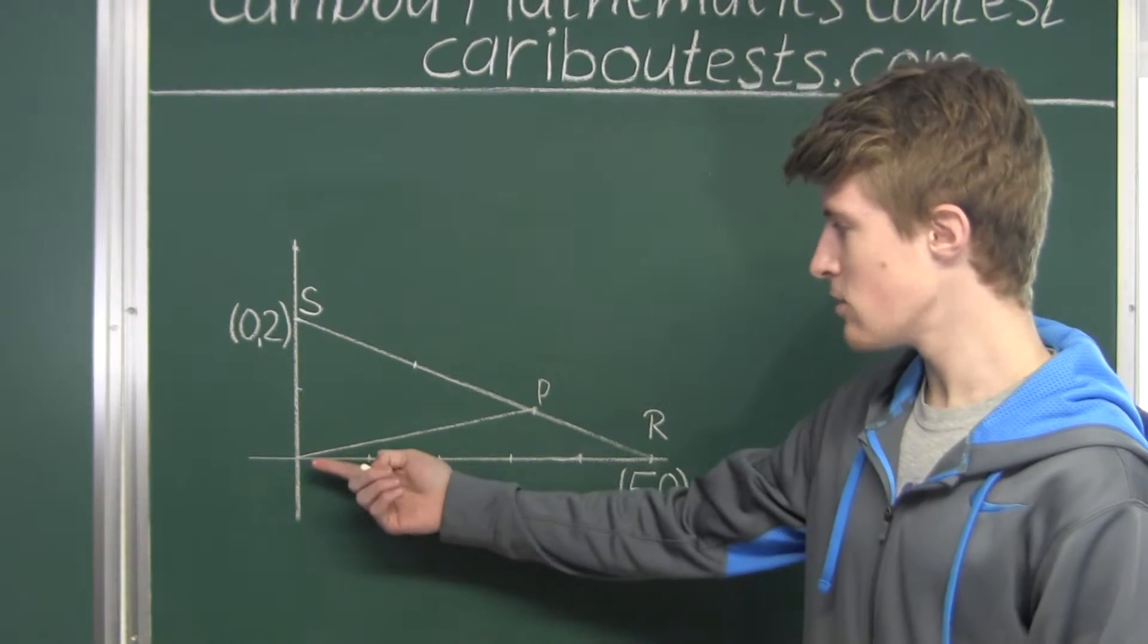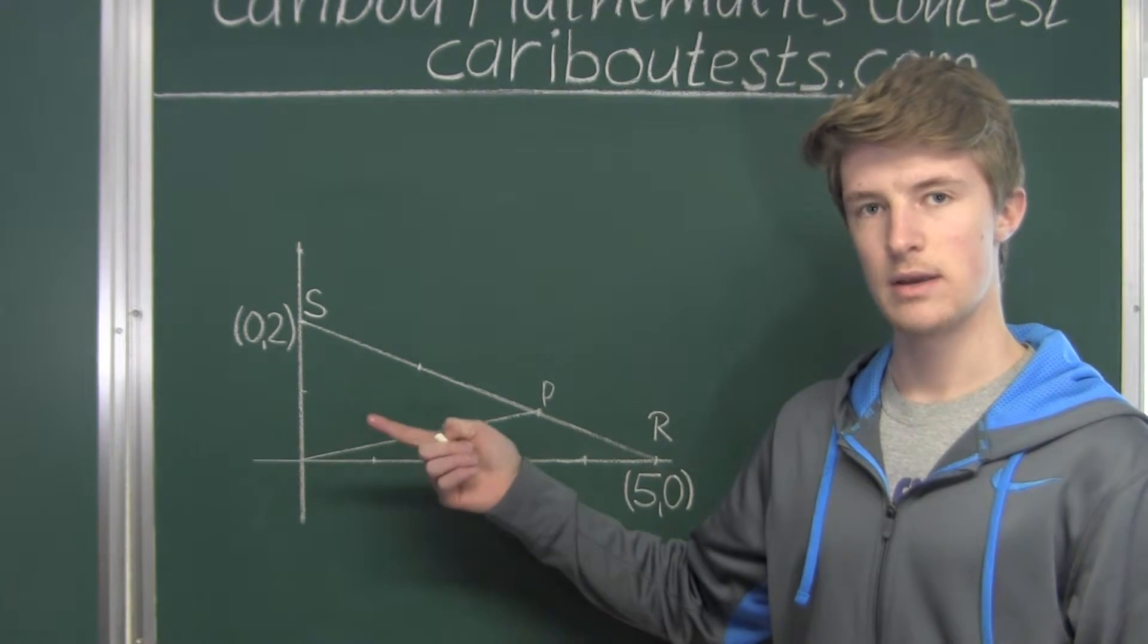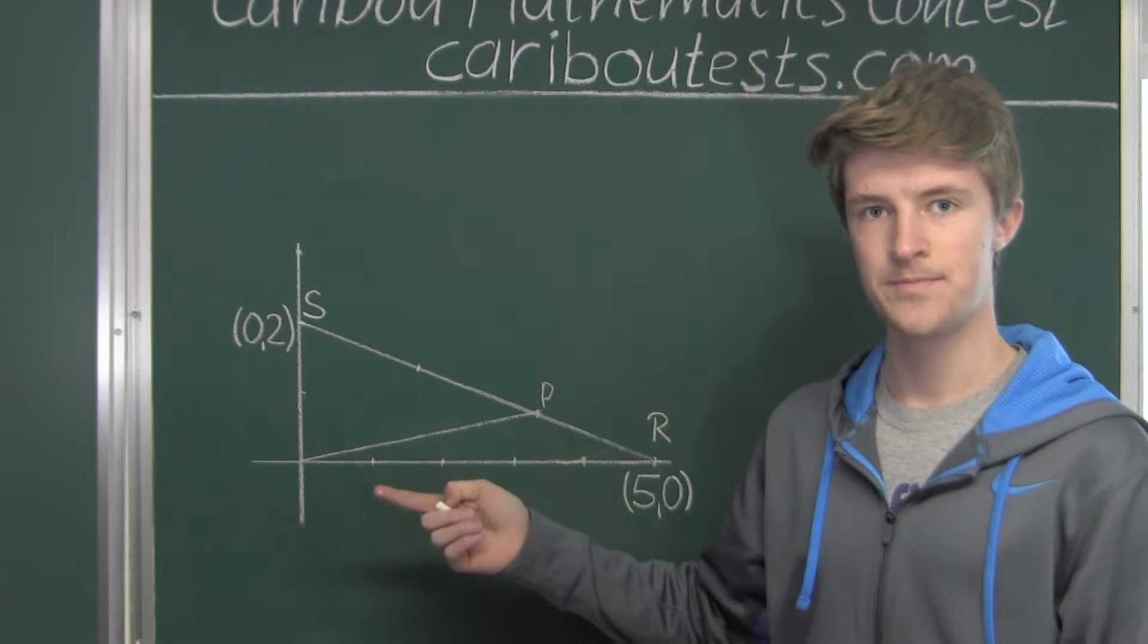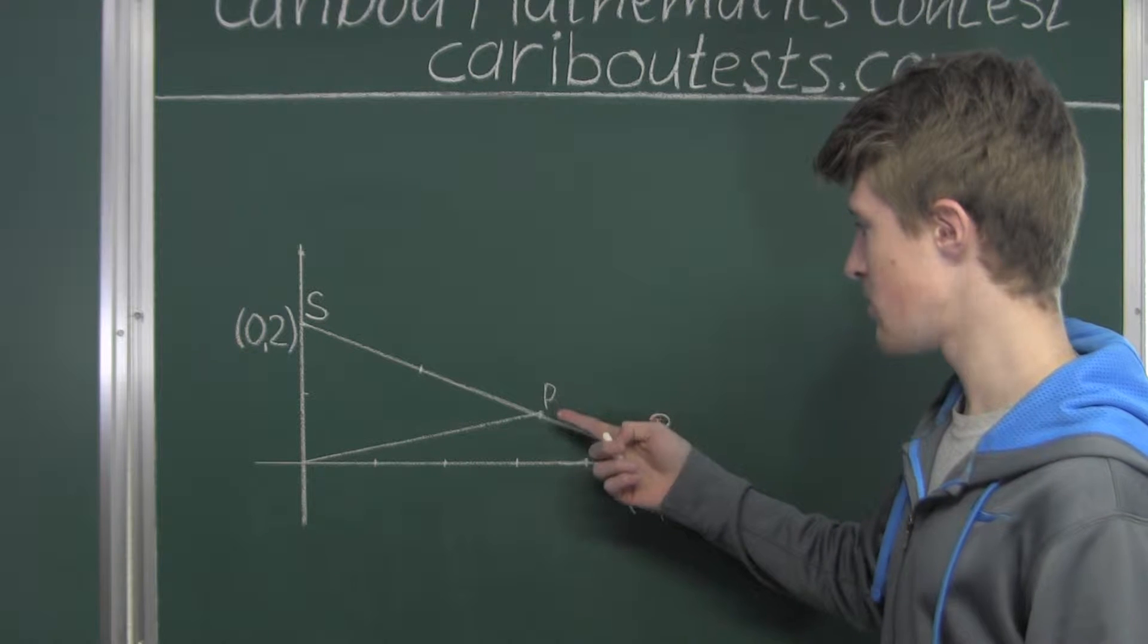But now we know the point, one of the points of this line, which is the origin (0,0). So in order to find the slope, we need another point and its coordinates. So we want to find out the coordinates of this point P.